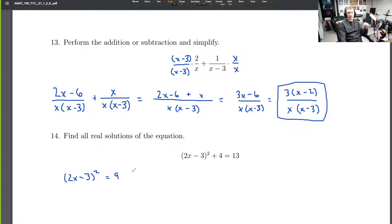Now we're going to square root both sides. So I'm going to write it like this. Square root both sides. Okay. On the left side, we have 2x minus 3.